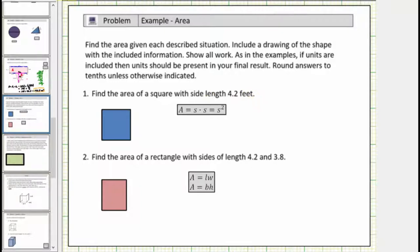We begin with a square and we'll label two adjacent sides 4.2 feet. We do not have to label all four sides because opposite sides have the same length. And now the area for a square is A equals s times s, which equals s squared, where A is the area and s is the length of one side.